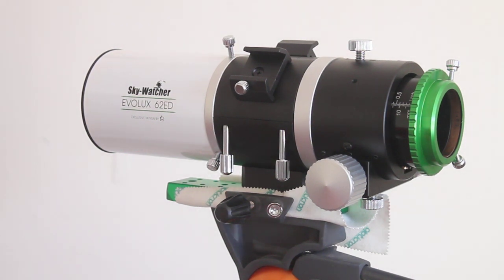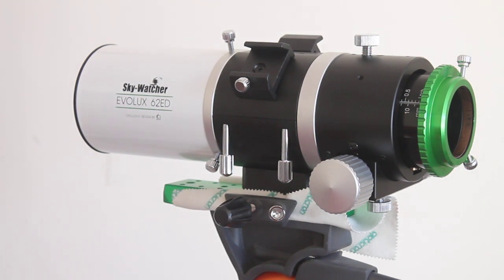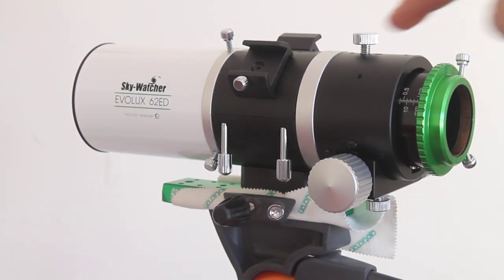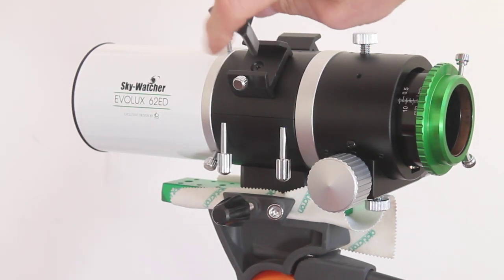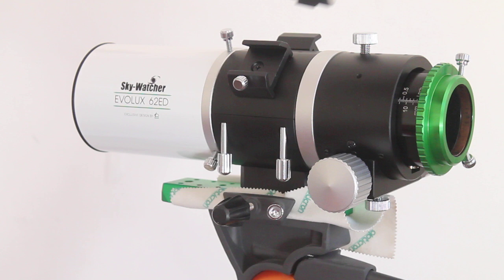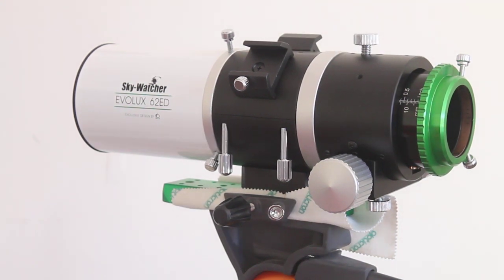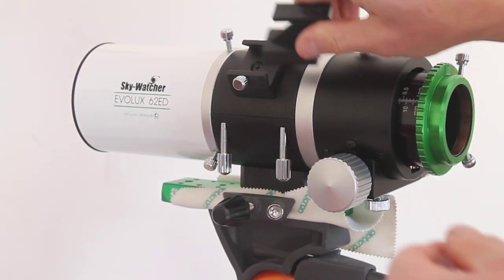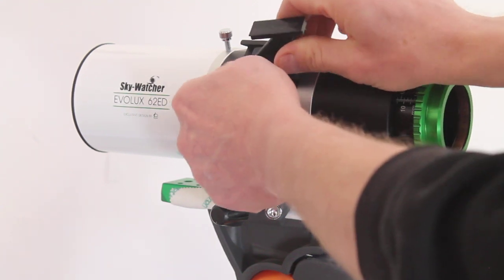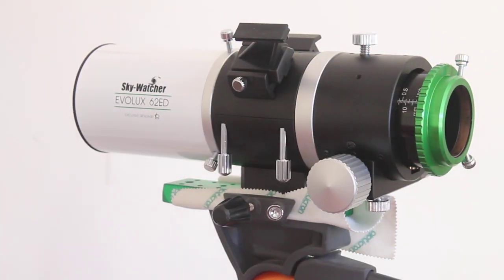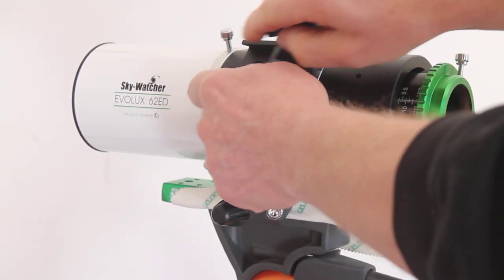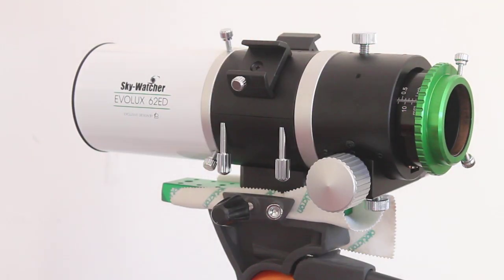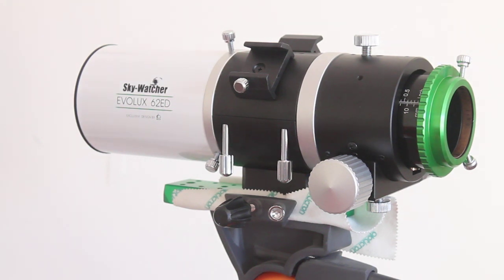Something I noticed with a lot of Sky Watcher finder scope brackets, there's a little groove in there because you can see there's a little part at the bottom which slides into the bracket. I put one of these on here eventually, and it goes on nice and securely. That's not going anywhere, so very good there to have two finder scope brackets.